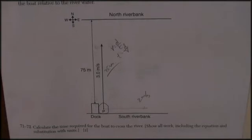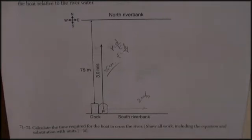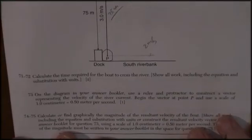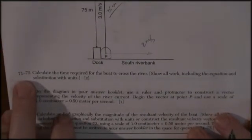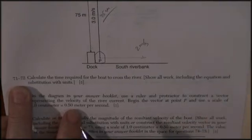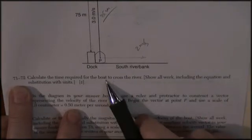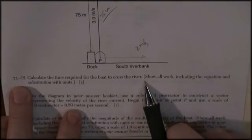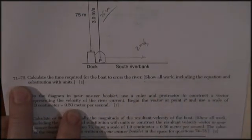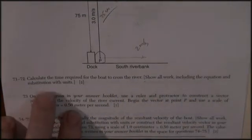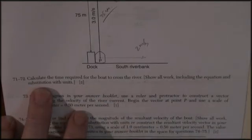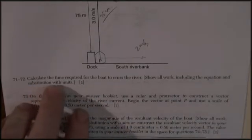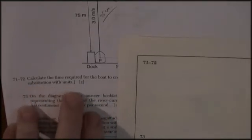Let's go see what they're asking. Questions 71 and 72: calculate the time required for the boat to cross the river. Show all work including the equation, substitution with units. We did that in our head — let's go ahead and get points for it.